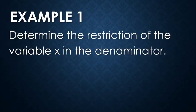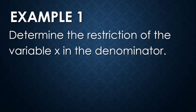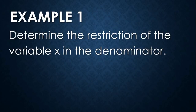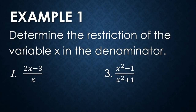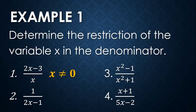Example number one: Determine the restriction of the variable x in the denominator. The restriction is found by equating the denominator to zero. What value of x, when placed in the denominator, makes the expression undefined? Of course, zero. Therefore the restriction is x should not be equal to zero.